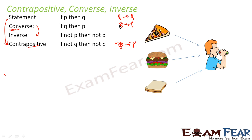For inverse, what you have to do is just invert it. If p then q becomes: if not p, then not q. So everything is derived from the original statement.